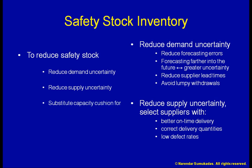Sometimes, instead of carrying a large safety stock, it may be better to substitute a large capacity cushion. Such a situation may occur if the item in question is very expensive, or there is a high risk of the item becoming obsolete, or the demand quantity is very small. Rather than hold safety stock inventory, we keep production capacity available so that we can quickly fill the need for the item.